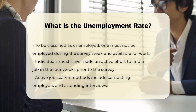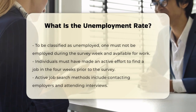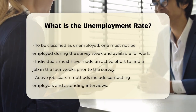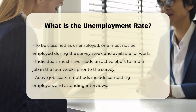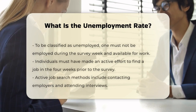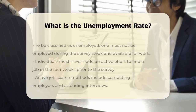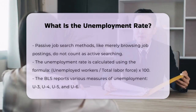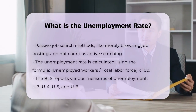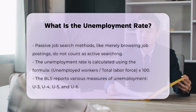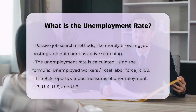Calculating the unemployment rate. The unemployment rate is calculated by dividing the number of unemployed people by the total labor force and then multiplying by 100. The formula is: Unemployment Rate = (Unemployed Workers / Total Labor Force) × 100.